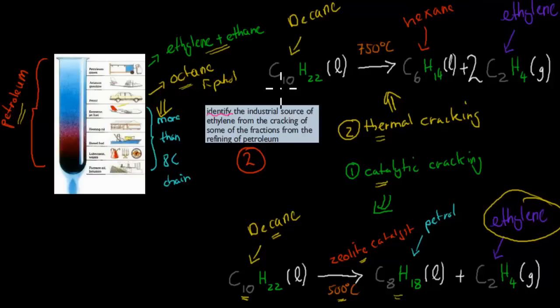Another way is, again, we start with decane, 10-carbon alkane. We have 750-degree Celsius. What we do is we produce hexane and 2 ethylene. So I was using only temperature, the other one using temperature and catalyst. So that's how we can get, from petroleum, how we can get ethylene.